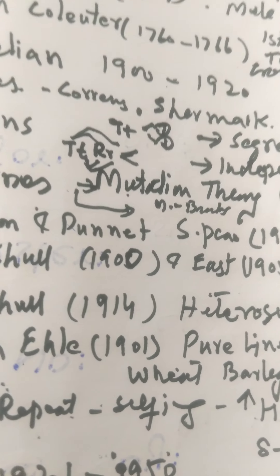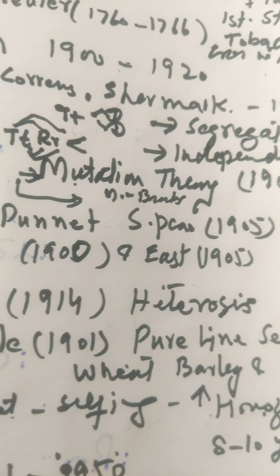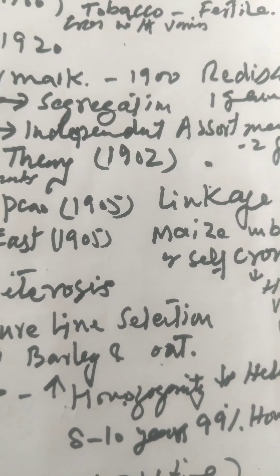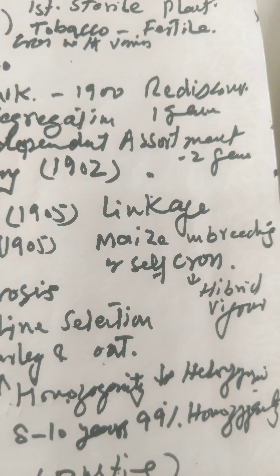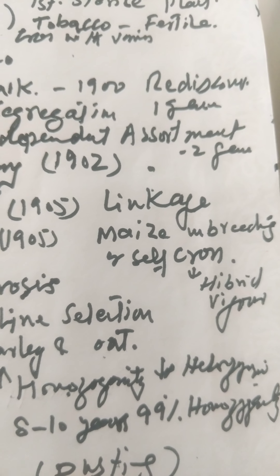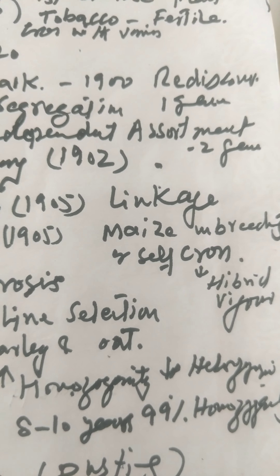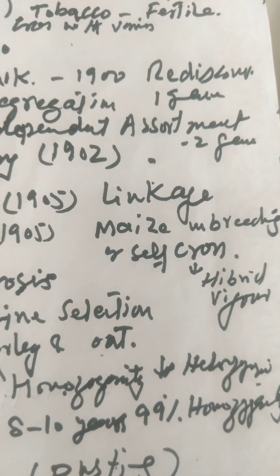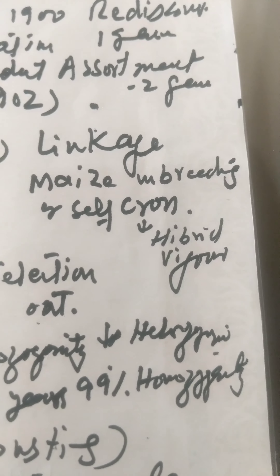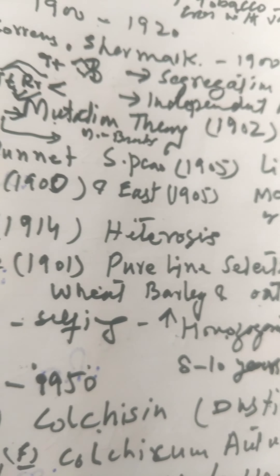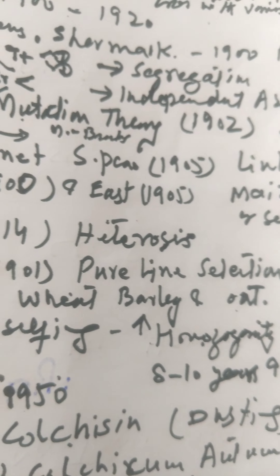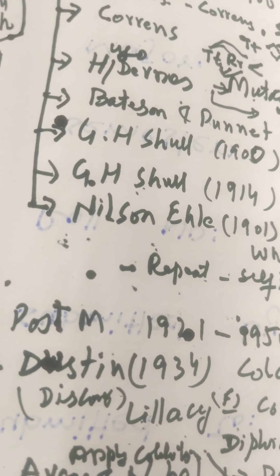Next are GHL in 1900 and East in 1905. They worked on maize, studying inbreeding and self-crossing to understand hybrid vigor. GHL, in 1914, proposed the concept of retroses.